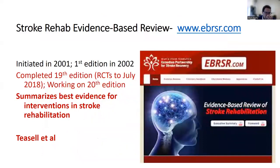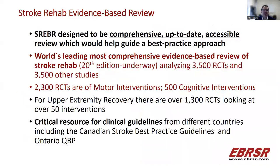We've been looking at the evidence, and I would refer you to the Evidence-Based Review of Stroke, now in its 21st edition, which began in 2001. It provides a summary of all evidence-based interventions in stroke — free, comprehensive, and up-to-date. It has reviewed over 3,500 randomized controlled trials and 3,500 other studies. Over 2,300 of those RCTs are motor interventions, and for the arm itself, there are over 1,300 randomized controlled trials looking at over 50 interventions. This provides a critical resource for clinical guidelines from different countries including Canada.